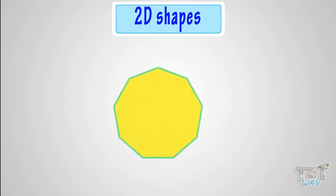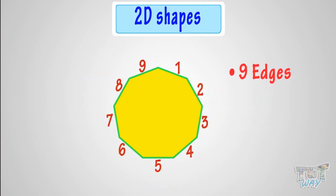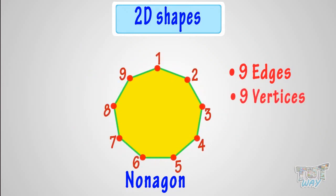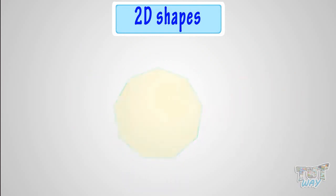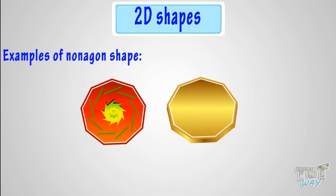This is a polygon that has nine straight sides, and it is called a nanogon. It has nine vertices and nine edges. These are some of the nanogon-shaped things.